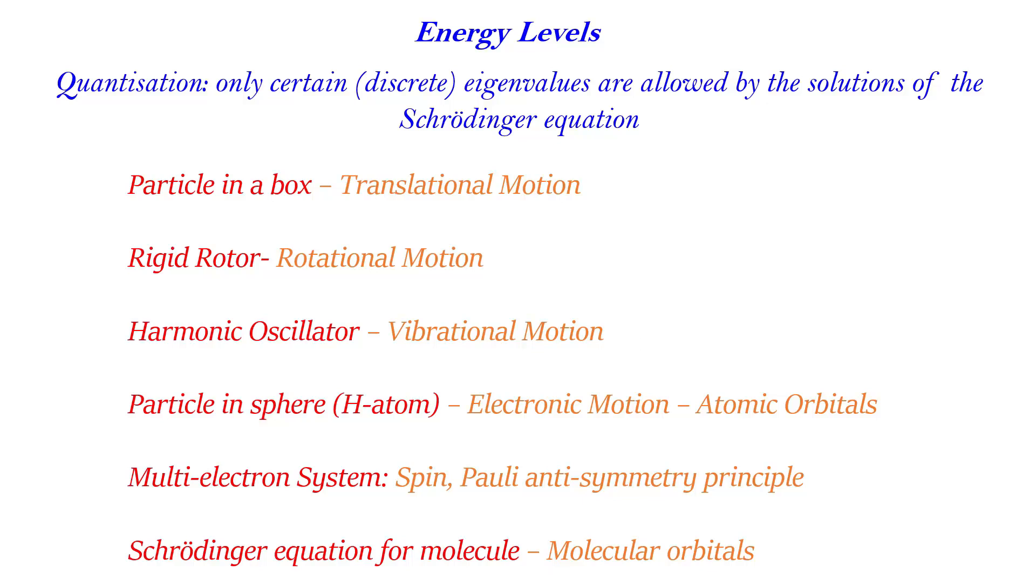For multi-electron systems, we can solve Schrödinger equations. You have to incorporate here spin, that is Pauli anti-symmetry principle. Finally, if we can solve the Schrödinger equations for molecules, what we will get are energy levels of the molecules where electrons can stay, and that actually defines the molecular orbitals. If you see the Hamiltonian...